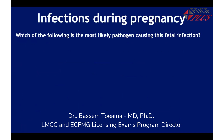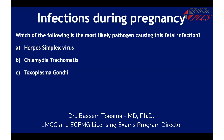The question asks: which of the following is the most likely pathogen causing this fetal infection — herpes simplex, chlamydia, toxoplasma, varicella zoster, or parvovirus B19? How do we differentiate between them? There are distinctive clinical features for each one. This is where you link the analyzed question with your knowledge base from Toronto Notes.